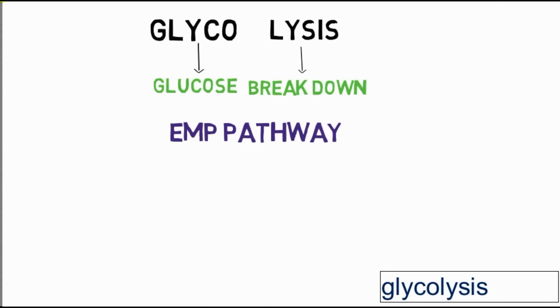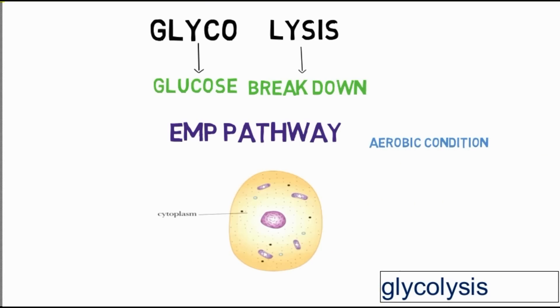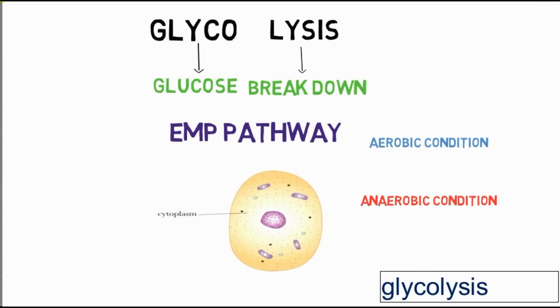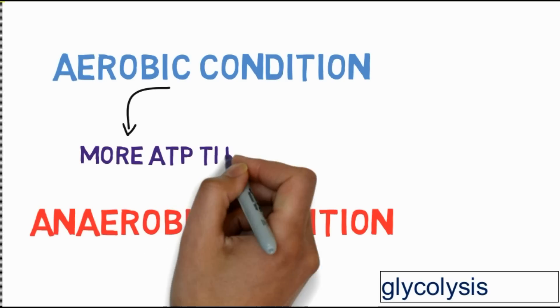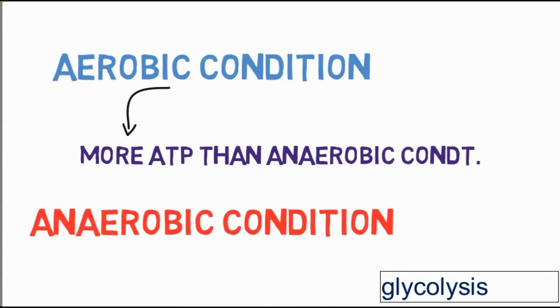Glycolysis takes place in the cytosol, that is the cytoplasm of the cell. The conditions for glycolysis can be aerobic — meaning presence of O2 — as well as anaerobic — meaning absence of O2. In aerobic conditions it produces more ATP than in anaerobic conditions.